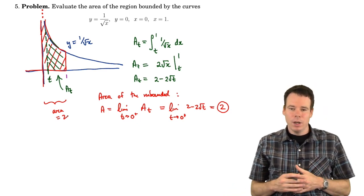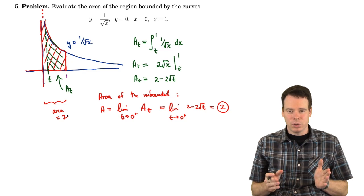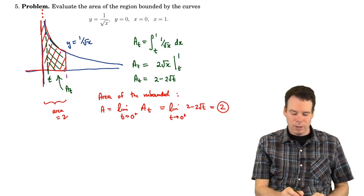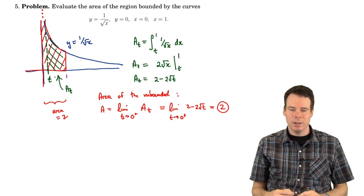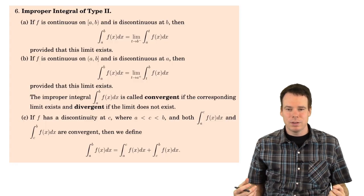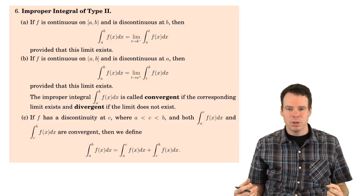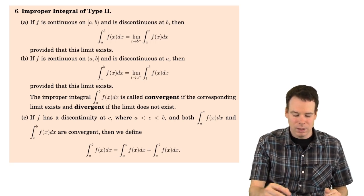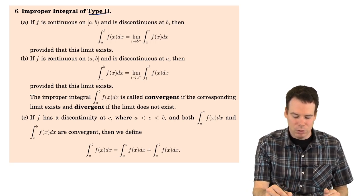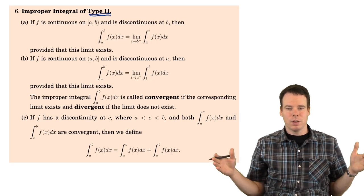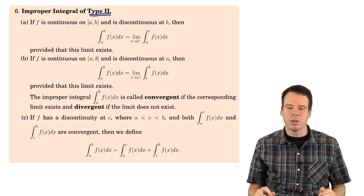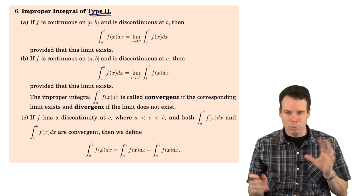So this is the idea. We couldn't go all the way to zero because the function was not continuous there, so instead we stop a little bit short with t, work out an expression for the value of the integral from t to 1, and then see what happens in the limit as t goes to zero. This allows us to make sense of integrals of functions where there are discontinuities on the interval of integration. These are known as improper integrals of Type 2. Type 1 was integrating over infinite intervals; Type 2 is integrating over finite intervals where there's potentially a discontinuity at the endpoints or somewhere in the middle.